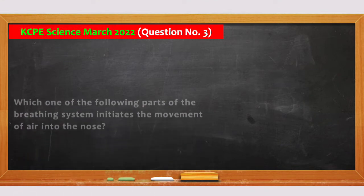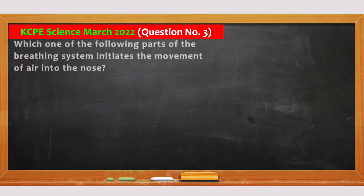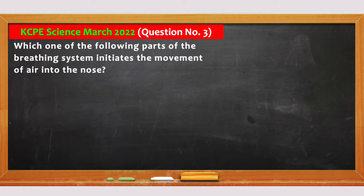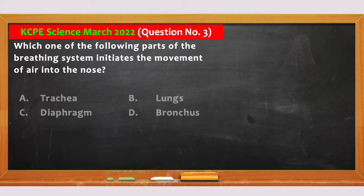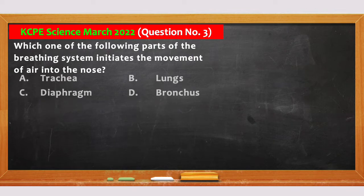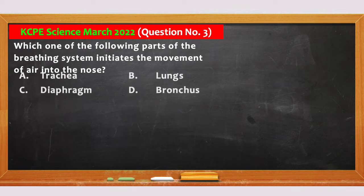Which one of the following parts of the breathing system initiates the movement of air into the nose? A. Trachea. B. Lungs. C. Diaphragm. And D. Bronchus.